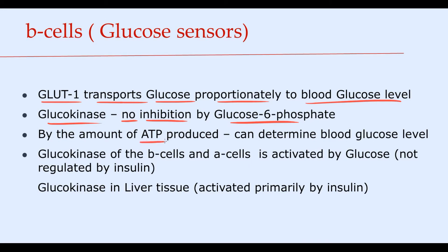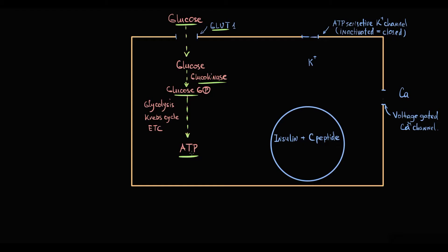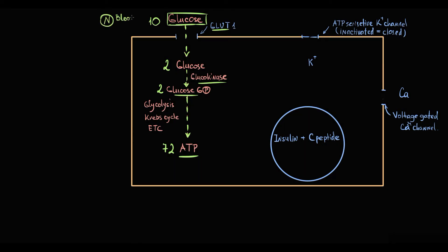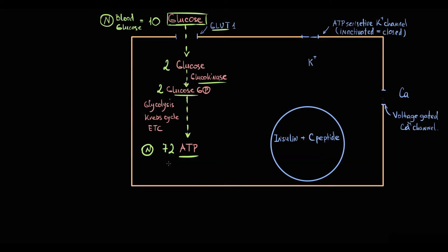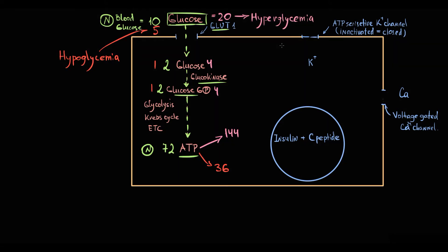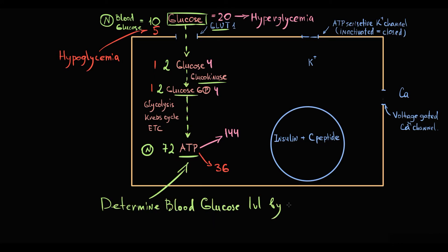By the amount of ATP produced per minute, beta cells can determine changes in blood glucose level. For example, if normal blood glucose produces 72 ATP molecules per minute, then if ATP drops to 36 per minute, blood glucose is two times lower than normal — hypoglycemia. And if ATP becomes 144, blood glucose is two times higher than normal — hyperglycemia. These proportional features make cells capable of correctly assessing blood glucose level by the amount of ATP produced per minute.